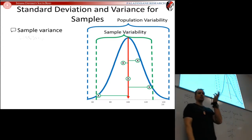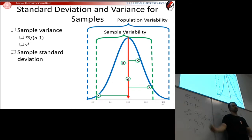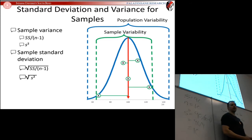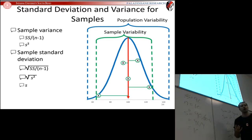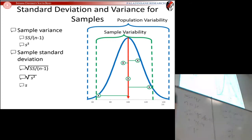And then we also have sample standard deviation. Same move as before: take the sample variance and take the square root of it. The square root of the sample variance gives you S, which is the sample standard deviation. So that is the background to what we are going to be calculating now in Excel.